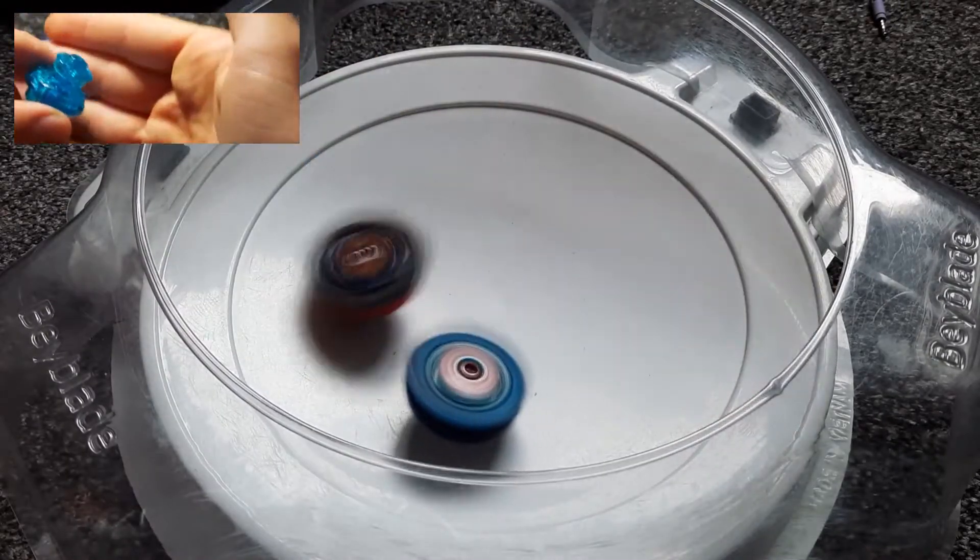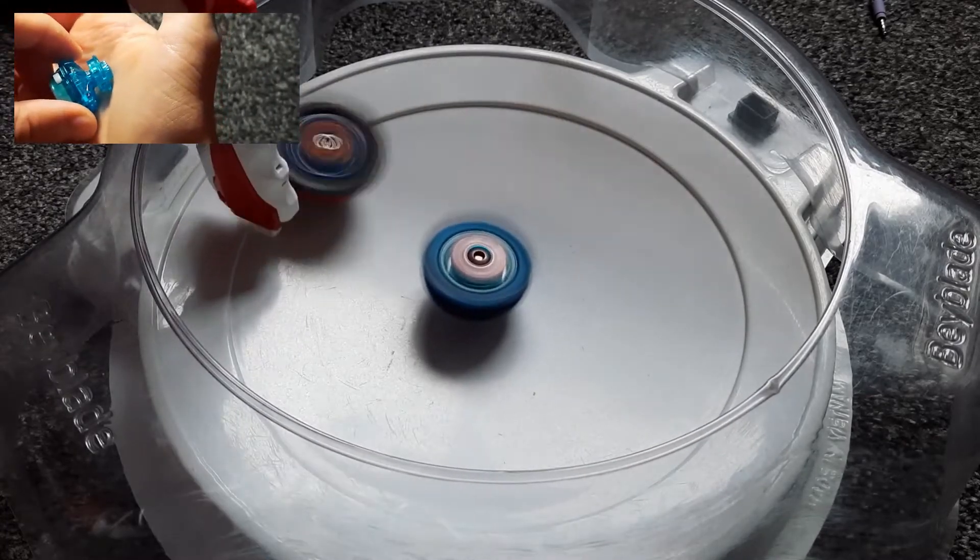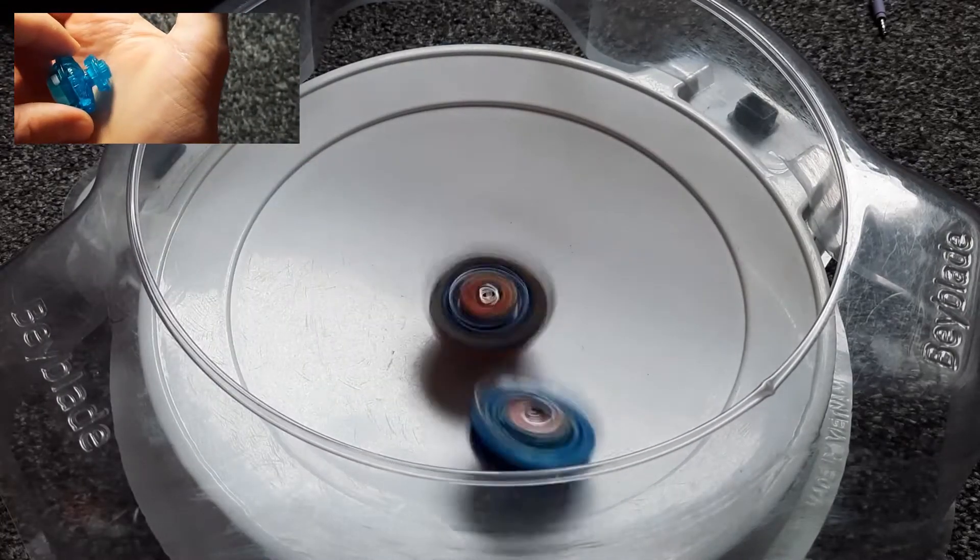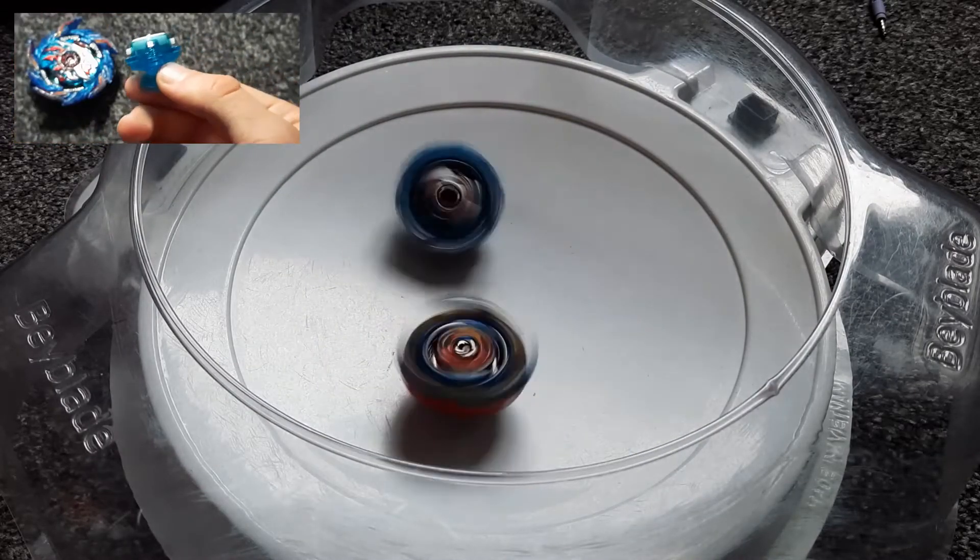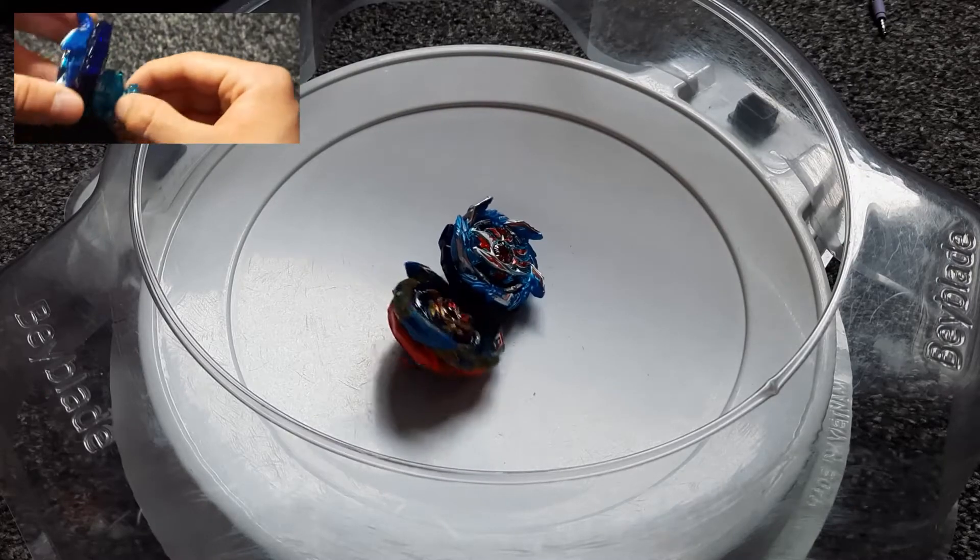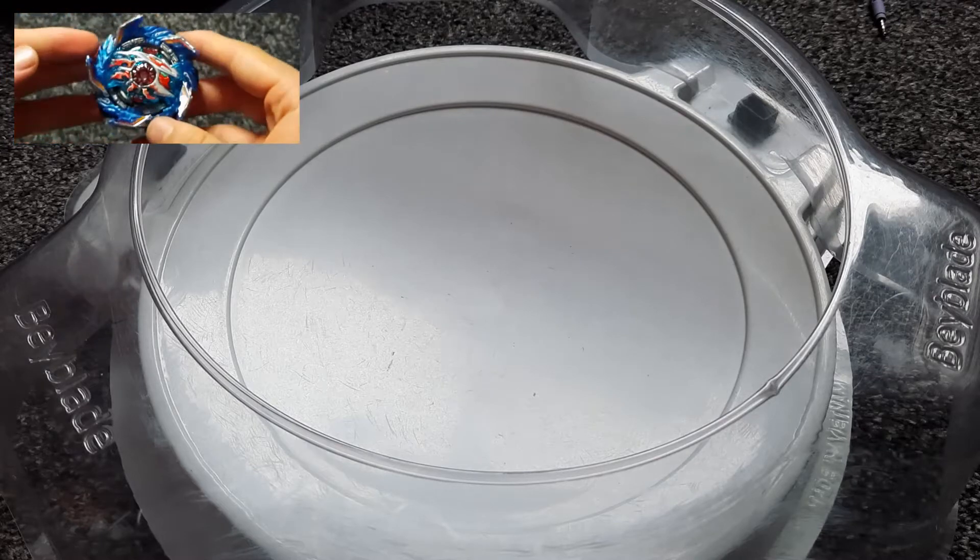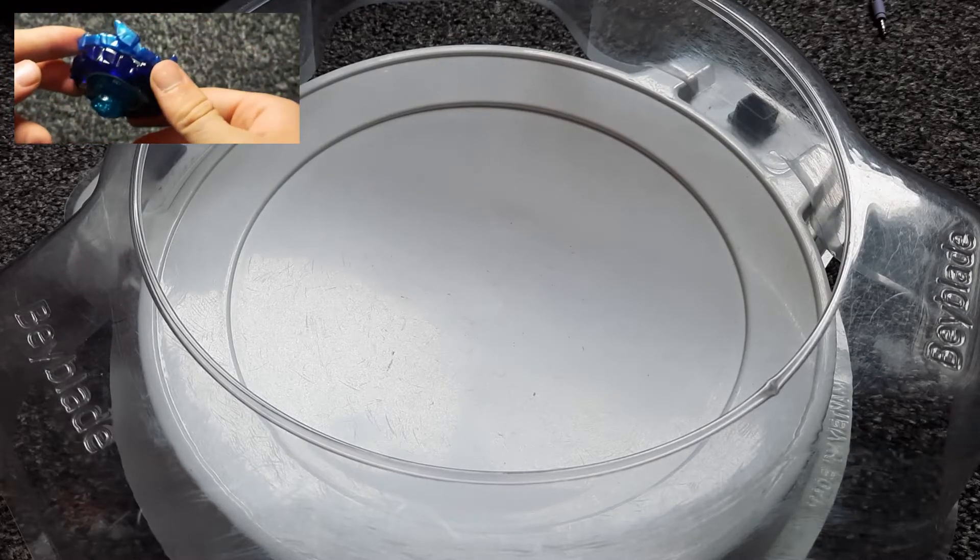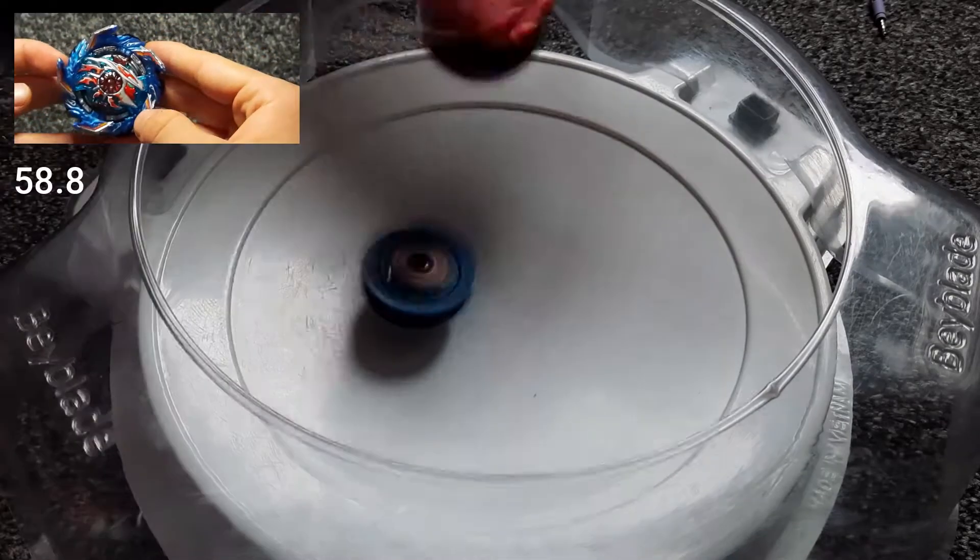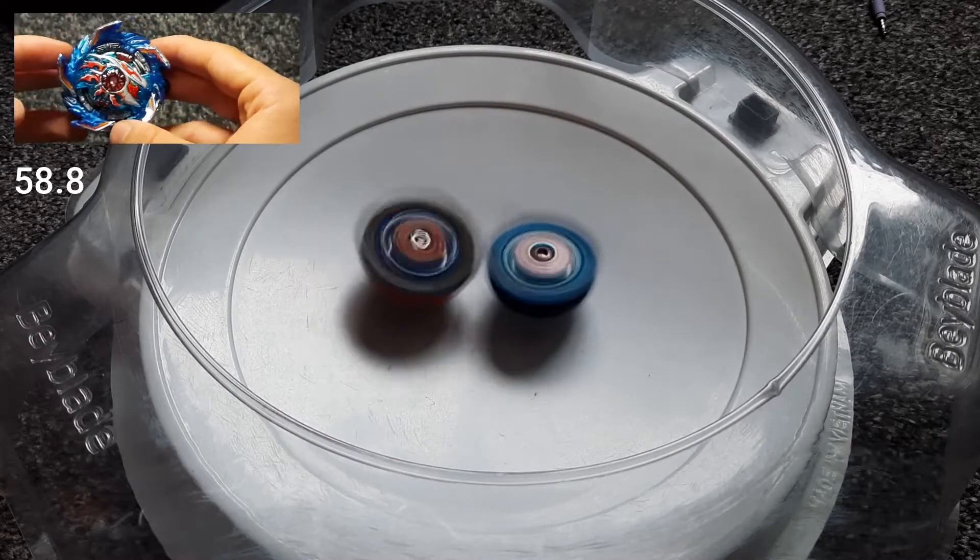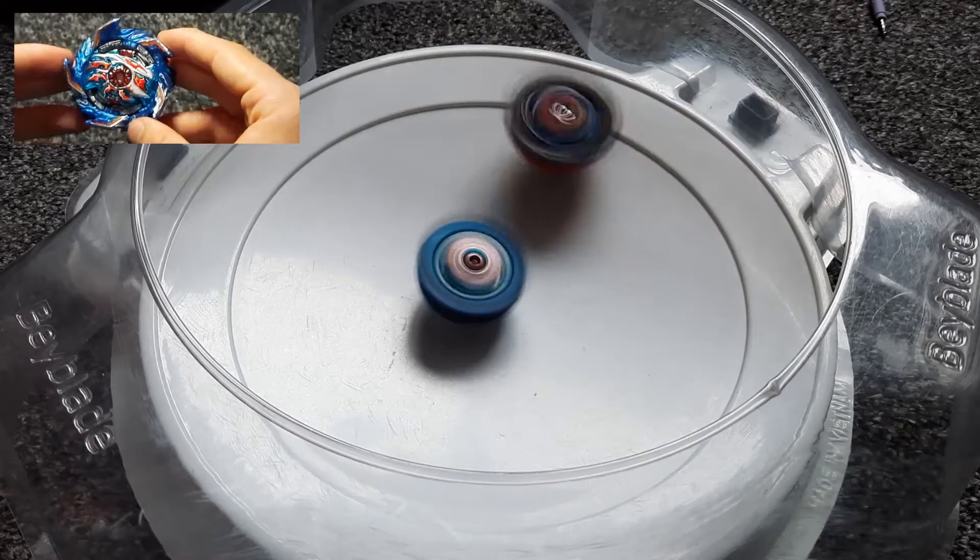Overall I don't think this driver is that good. I wouldn't use this driver if I was trying to build anything competitive but it's a fun driver to use and it's got a good design. Putting the whole bay together you have King Helios Zone 1B. The stock combo weighs 58.78 grams. As I've said before it's a left spinning balance type beyblade.